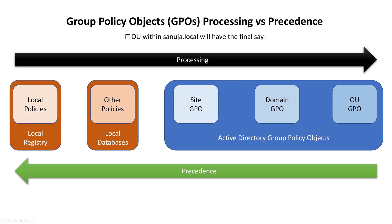So if you have a local policy and that local policy gets overridden by the organizational unit policy, whatever happened at the local level doesn't matter anymore. It is very important to understand that for Group Policy Objects, processing happens from local to site to domain to organizational unit, but the precedence is always that the organizational unit policies take over everything else.